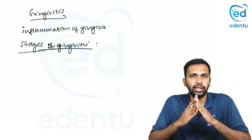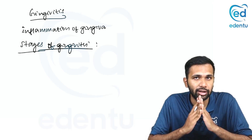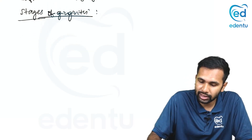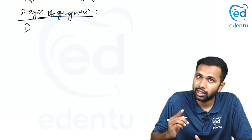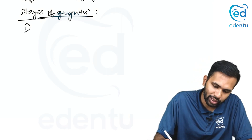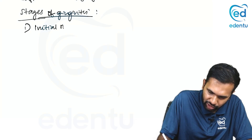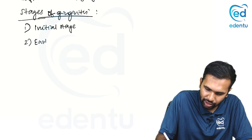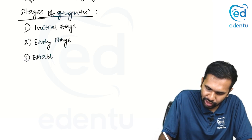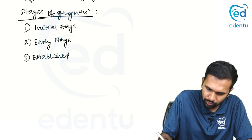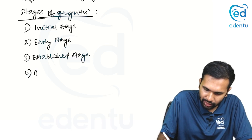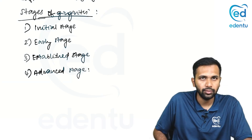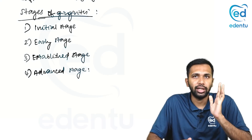This entire topic can be summarized in one single table. If you can learn this table, it will answer all the questions that can come. There are four stages of gingivitis: number one, the initial stage or initial lesion; then the early stage; then the established stage; and finally the advanced stage or the advanced lesion — initial, early, established, and advanced.